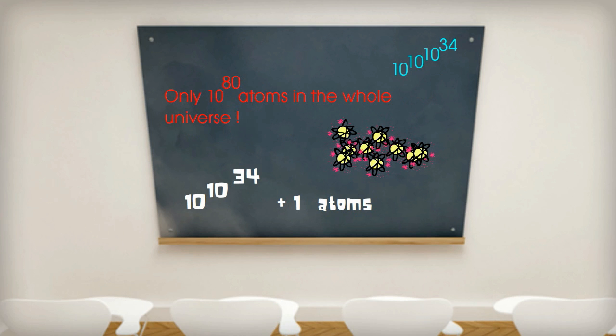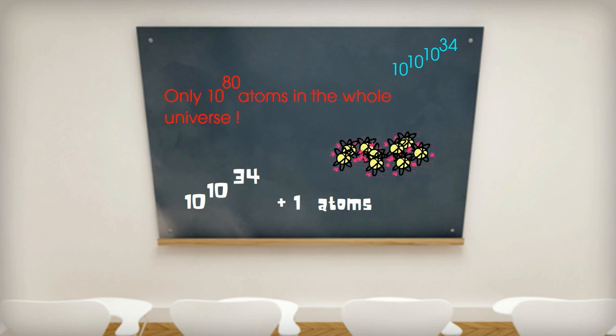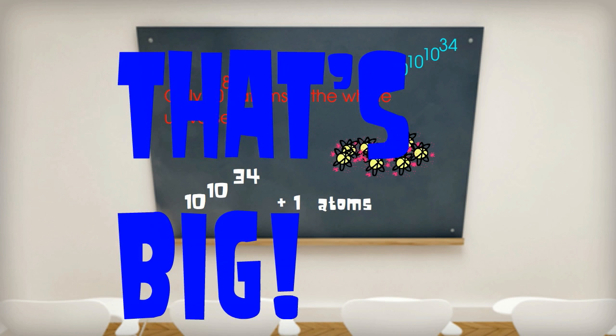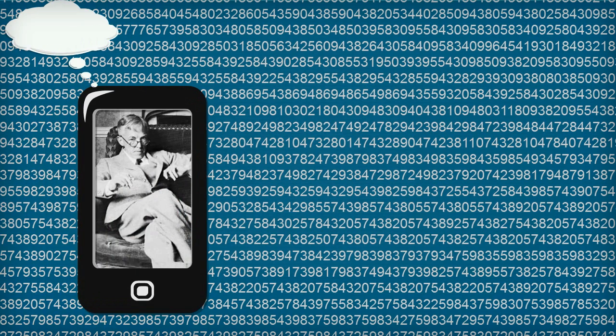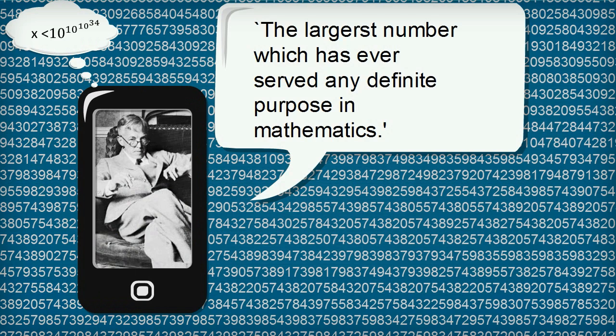So the largest number which has ever served any definite purpose in mathematics is so big that even if we used every atom in the whole universe for the ink, or to write or print the number, we would run out of ink. There simply aren't enough atoms in the universe to write or print this number. That's big. That's very big. So that's the number that was described as the largest number that has ever served any definite purpose in mathematics. I hope you've enjoyed seeing how it arose, but more importantly just how big it is.